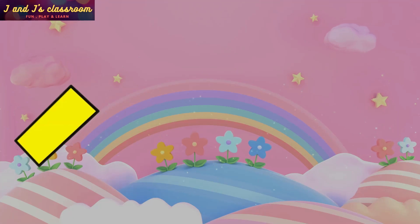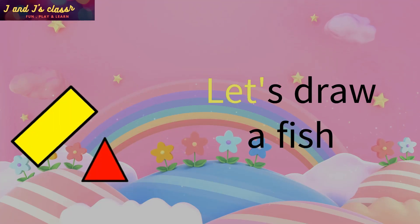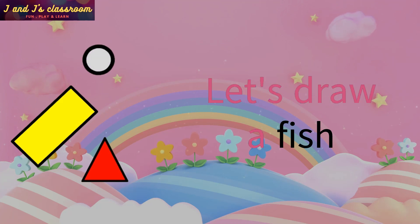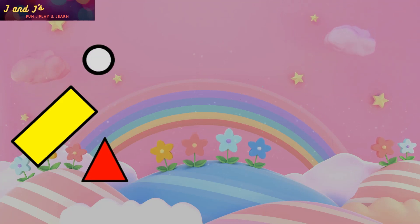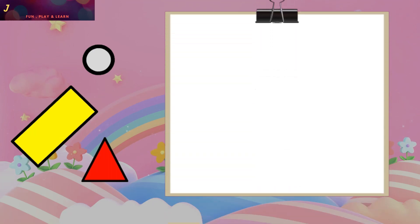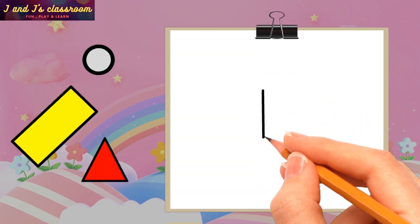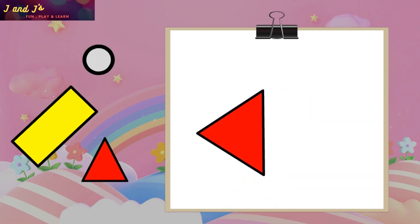First, we are going to draw a fish using rectangle, triangle and circle. Now take a paper and listen carefully before you start your drawing. At first, draw a triangle for the fish head.